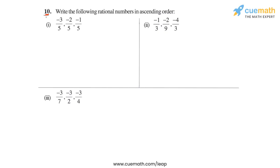Question 10 of this exercise has three parts and there are three rational numbers in each part. We have to write those rational numbers in ascending order. Let's look at part one, in which the three numbers are minus 3 by 5, minus 2 by 5, and minus 1 by 5.